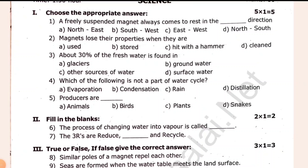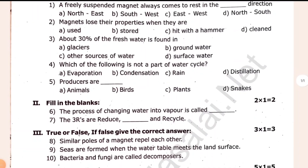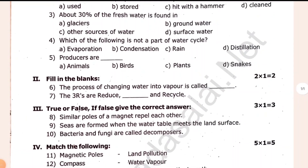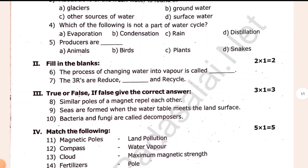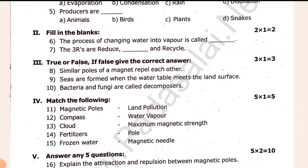About 30% of fresh water is found in dash. Each of the following is not a part of a water cycle. Producers are dash — animals, birds. Fill in the plants. The process of changing water into vapor is called dash.